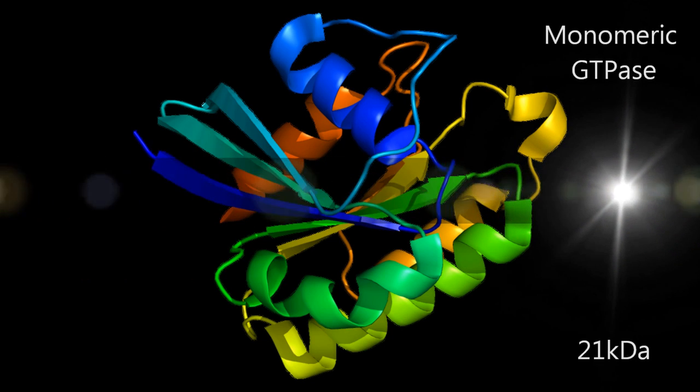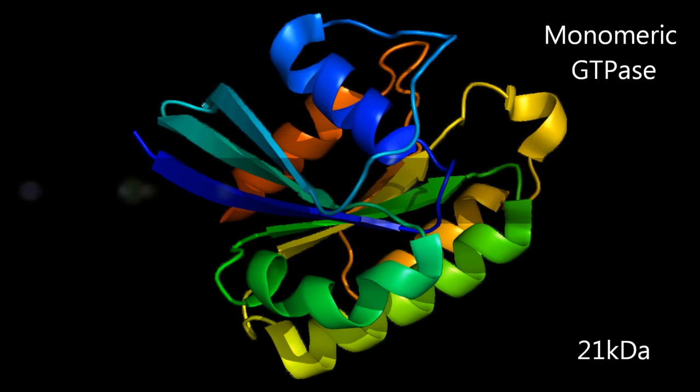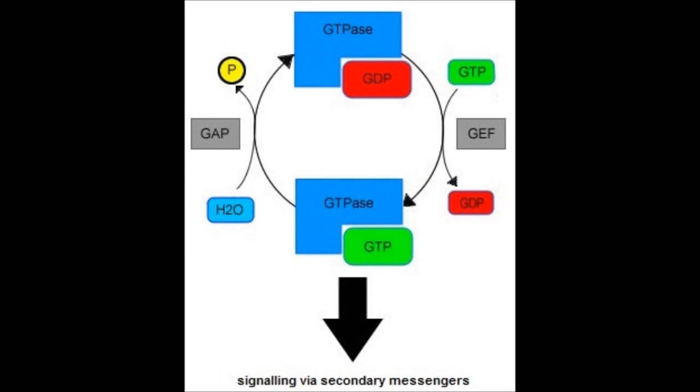Small GTPase binding proteins are small monomeric 21 kilodalton proteins with intrinsic GTPase activity that can bind to and hydrolyze GTP.